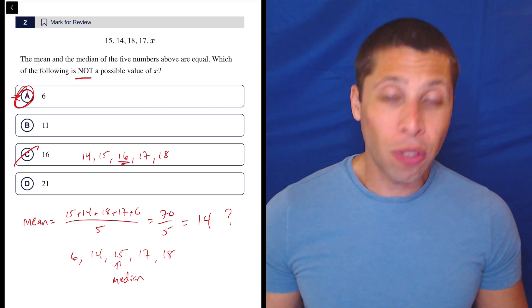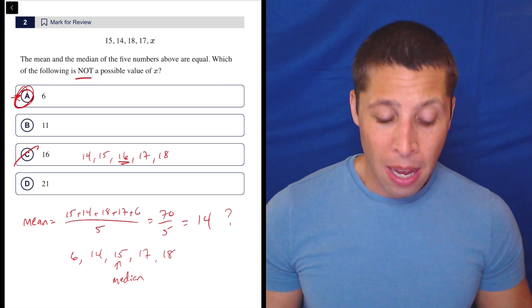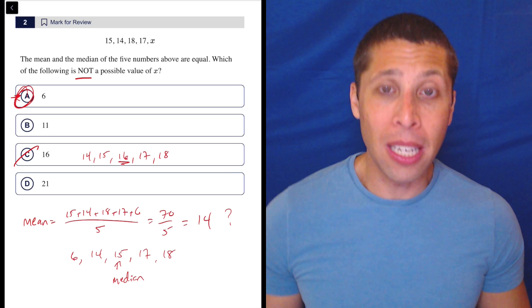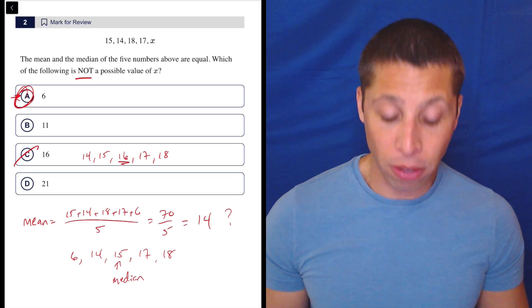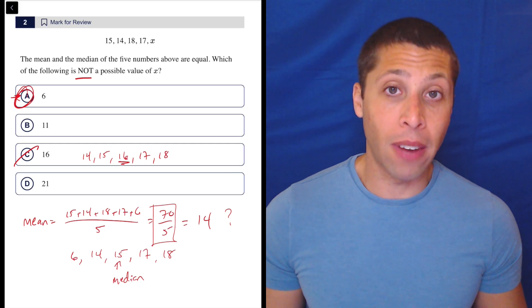But just remember, I guess there are some time shortcuts we can do, but I took the time to calculate the mean here. I did it on my calculator. I would have done it on my scratch paper. I still would have written this, the 70 divided by 5.